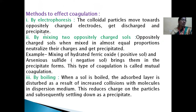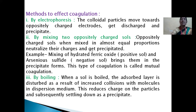Methods to affect coagulation: Number one, by electrophoresis — colloidal particles move towards the oppositely charged electrode, get discharged, and precipitate. Second, by mixing two oppositely charged sols — when mixed in almost equal proportion, they neutralize their charges and get precipitated. For example, mixing hydrated ferric oxide (a positive sol) and arsenic sulfide (a negative sol) brings them to precipitate form. This type of coagulation is called mutual coagulation.